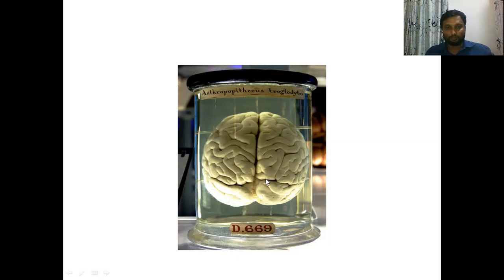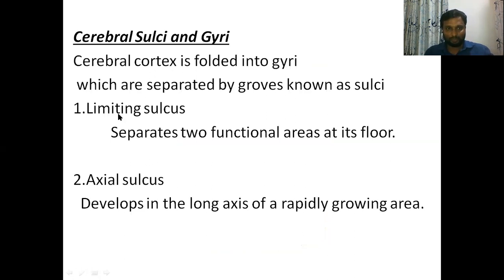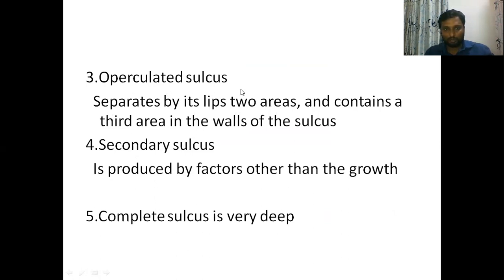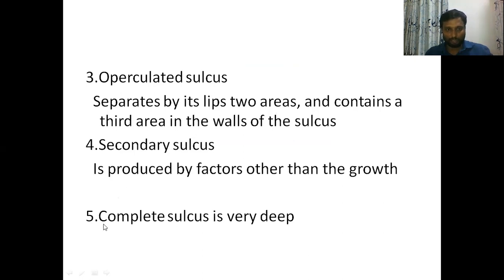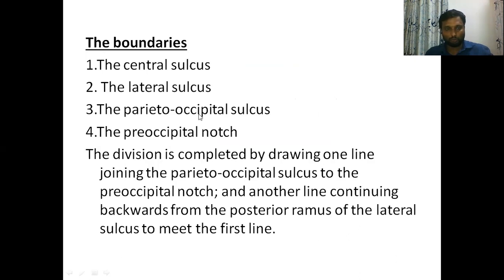There are different types of sulcus. The limiting sulcus separates two functional areas at its floor. The axial sulcus is seen in growing areas. The operculated sulcus separates two functional areas at its lips and has a third functional area in its depth. The secondary sulcus develops for reasons other than growth. The complete sulcus is very deep.